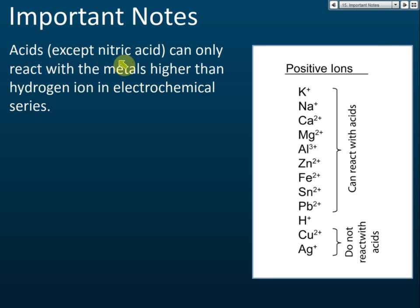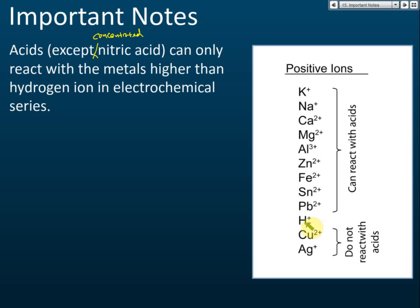Reactive metals are metals higher than hydrogen in the electrochemical series — except for concentrated nitric acid. Acids can react with potassium, sodium, calcium, magnesium, tin, and lead. Acids cannot react with copper, silver, or gold. Reactive metals are those metals above hydrogen in the electrochemical series.